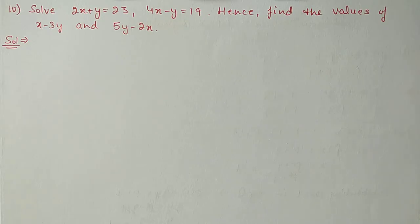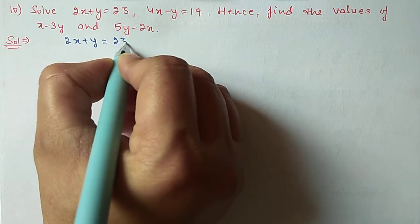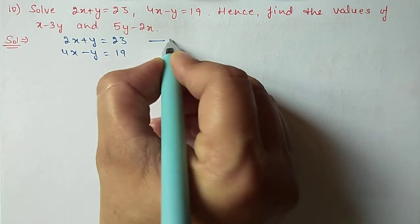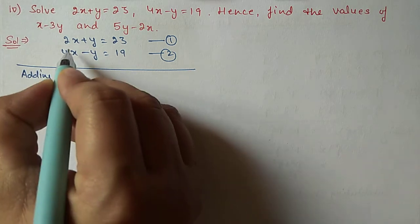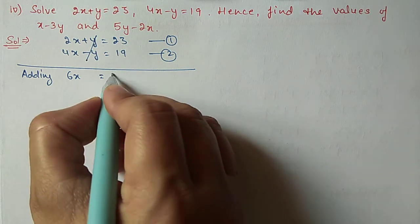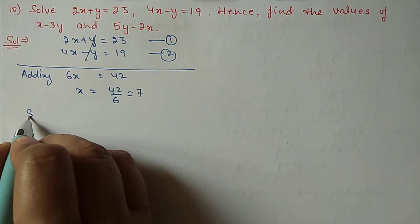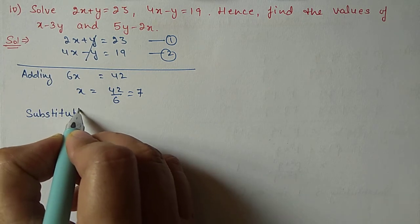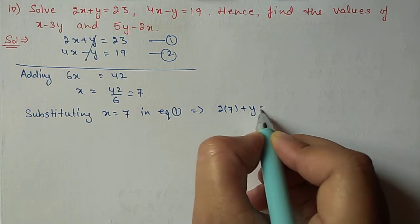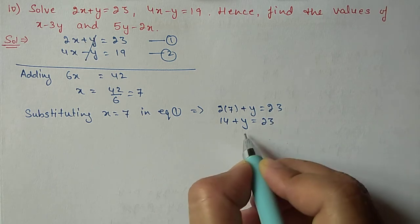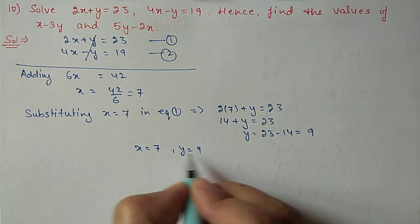Next we have question number 10: solve 2x plus y equal to 23 and 4x minus y equal to 19. The first equation is 2x plus y equal to 23 and the second is 4x minus y equal to 19. No multiplication is needed — the Y coefficient is already the same. Adding the two equations: 2x plus 4x equals 6x, Y terms cancel, and 23 plus 19 equals 42. So X equals 42 divided by 6, which is 7. Substituting X equal to 7 into equation 1: 2 times 7 plus y equals 23, so 14 plus y equals 23, giving Y equal to 9.